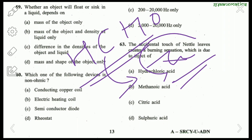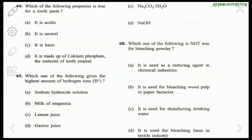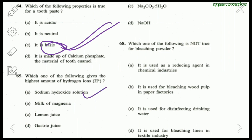The chemical name of formic acid is methanoic acid, so the answer is methanoic acid. Question 64: Which property is true for toothpaste? It is basic — no doubt. The answer is directly C. Question 65: Which gives the highest amount of hydrogen ions? Sodium hydroxide (NaOH) is a base, milk of magnesia is also a base. Between lemon juice (pH ~2) and gastric juices (pH 1.5–3), gastric juices are more acidic, so the answer is gastric juices.